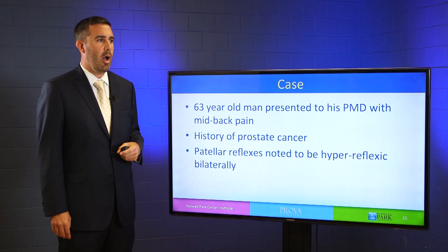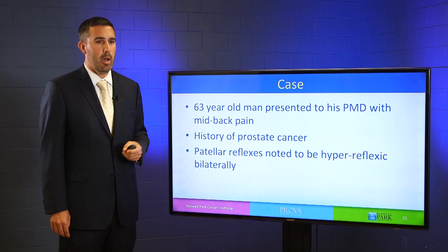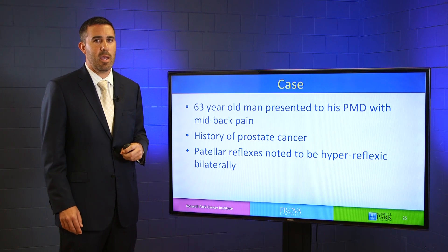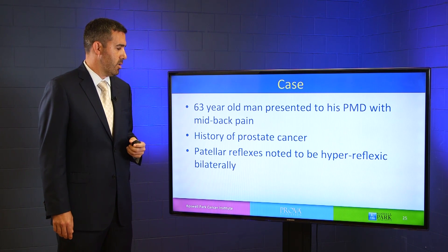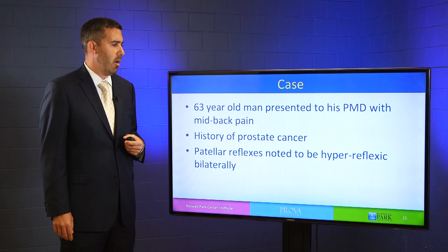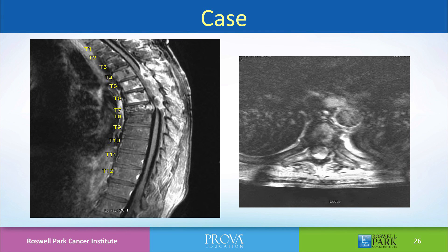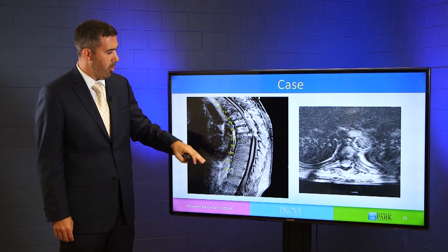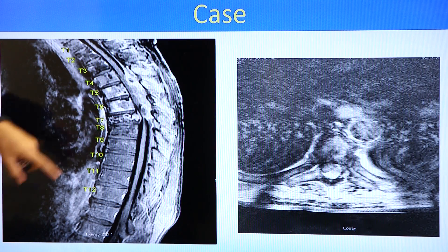Here is a case representation: a 63-year-old man presented to his primary care physician with mid-back pain, which was new for him — he would occasionally have low back pain, but mid-back pain was something new. He had a history of prostate cancer, and his physician noted that his patellar reflexes were hyperreflexic bilaterally, a new finding. An MRI of the thoracic spine was obtained, showing multilevel vertebral body disease. At the T7 level, there is a pathologic compression fracture — the vertebral body has pancaked down, with the posterior portion pressing against the spinal cord, and epidural disease posteriorly further compressing the spinal cord.